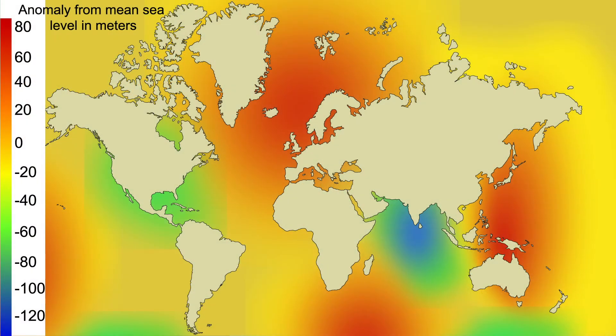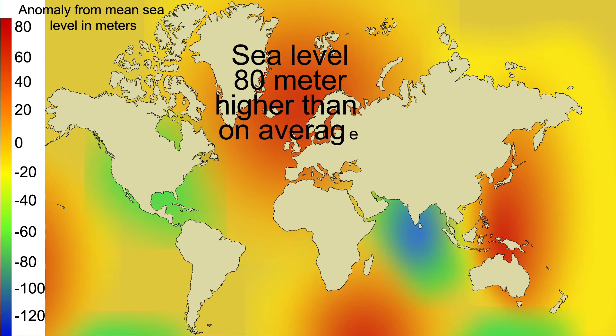In some places, such as Greenland, the sea level is 80 meters higher than average, and in other places, such as India, the sea level is 120 meters lower than average.